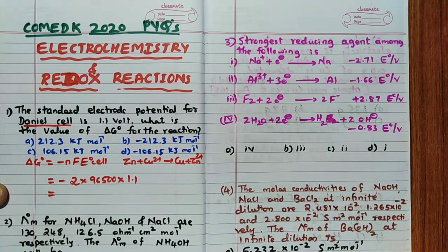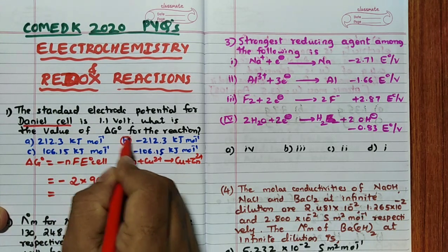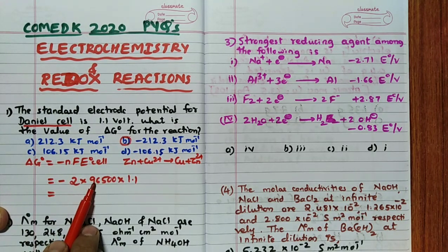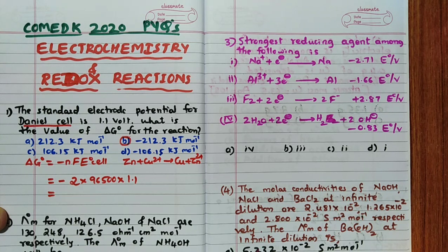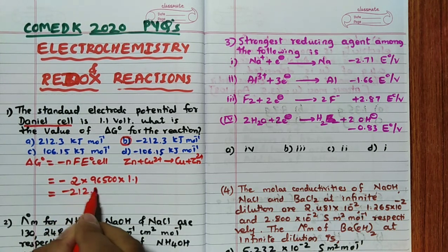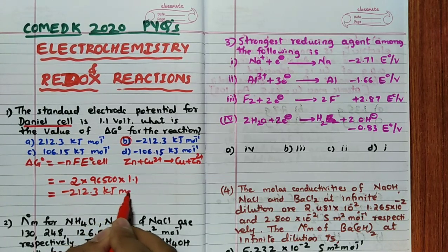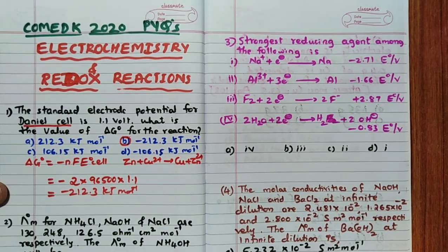Looking at the overall calculation: 2 × 96500 × 1.1 gives approximately 200, so the answer should be around minus 200. The exact answer is -212.3 kJ/mol, so option B is correct. This is a very simple but very important type of question.